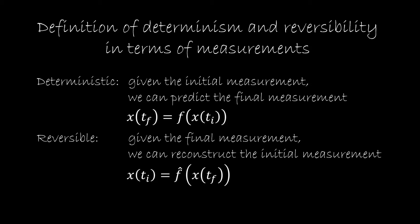A system would be deterministic if the final measurement is a function of the initial measurement, and it would be reversible if the initial measurement is a function of the final measurement. If it is both deterministic and reversible, this function would be the inverse of the other. Unfortunately, a lot of people stop here, but there is a problem — this is not enough for determinism and reversibility.